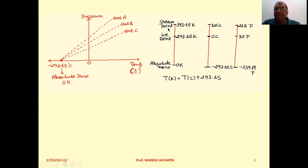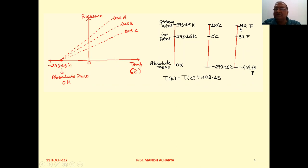The steam point is 373.15 K on the Kelvin scale, 100 degrees Celsius on the Celsius scale, and 212 degrees Fahrenheit on the Fahrenheit scale.